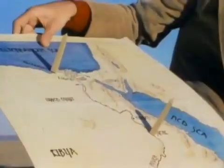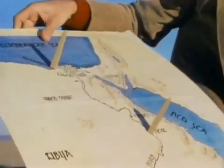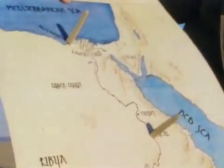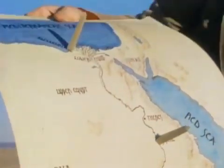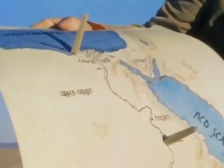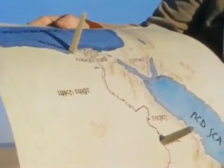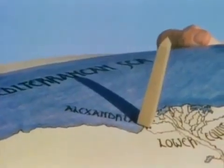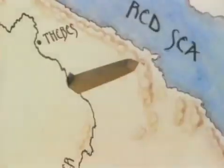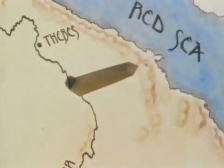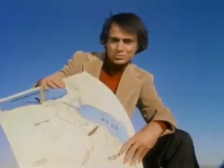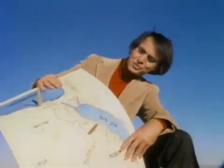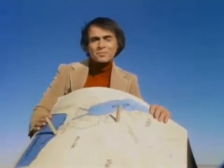But how could it be, Eratosthenes asked, that at the same instant there was no shadow at Syene and a very substantial shadow at Alexandria? The only answer was that the surface of the earth is curved.